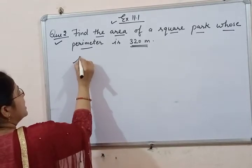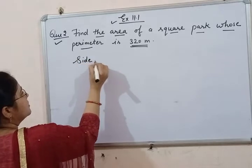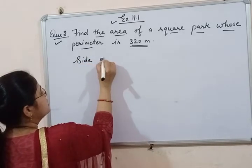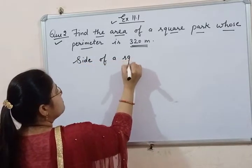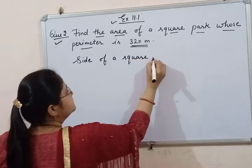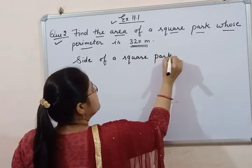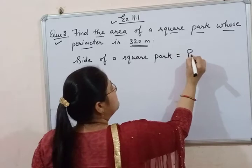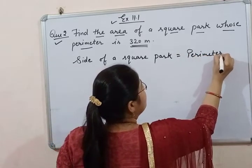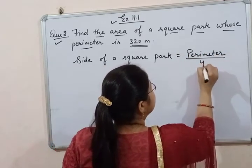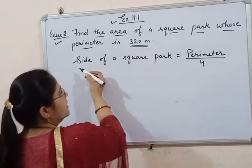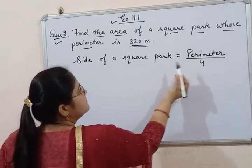So first we will find out the side. We can divide the perimeter by 4 to find the side of the square park.